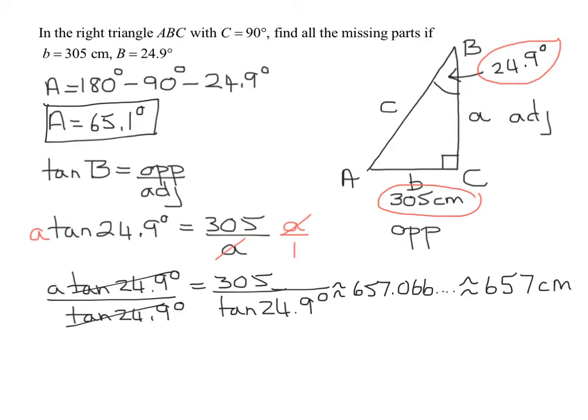So that is the value of A. I now know that A equals 657 centimeters. So now all I've got left to do is find C. Now, since we were given B and found A, I could use the Pythagorean theorem to find C.